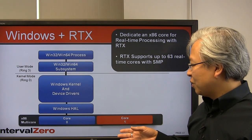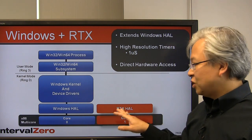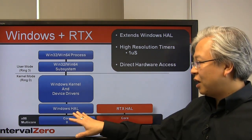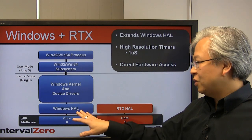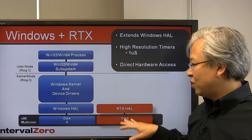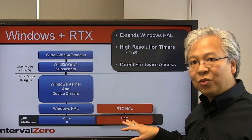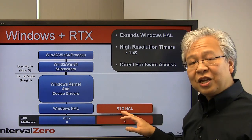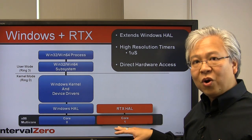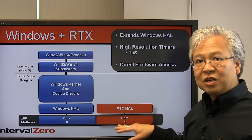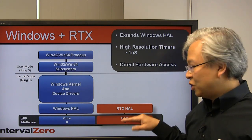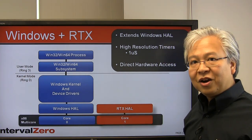Once we have this real-time core, RTX has its own hardware abstraction layer. We don't modify or replace the existing Windows HAL — we extend it. This allows direct access to the actual hardware with no virtualization, giving you 100% utilization of the core and no non-deterministic layer between your real-time software and the hardware.